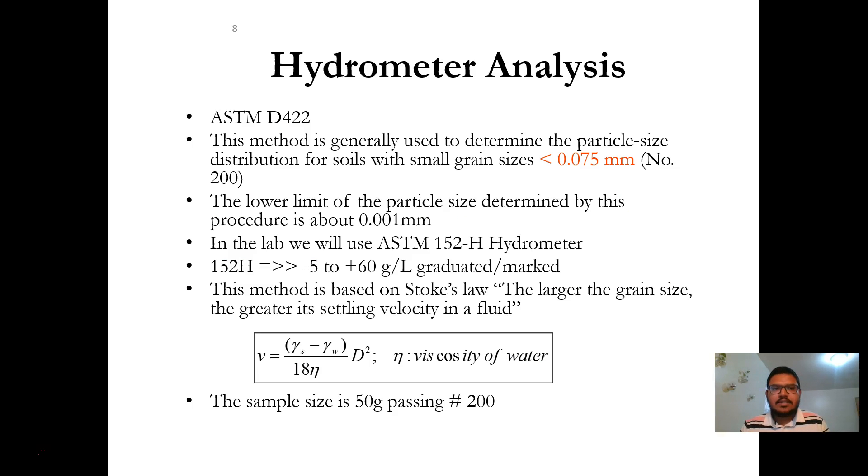We will follow ASTM D4228 standard. This method is generally used to determine the particle size distribution for soils with small grains, that means less than 0.075 millimeter. We will also use in this experiment ASTM 152H model hydrometer. 152H model hydrometer is marked from minus 5 to plus 60 gram per liter readings.